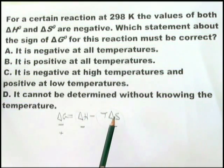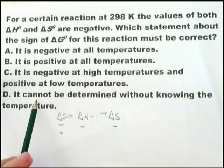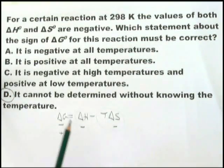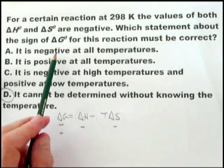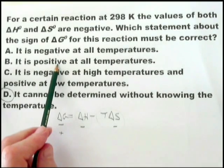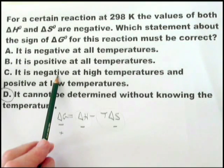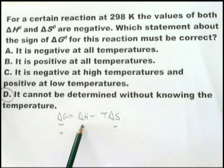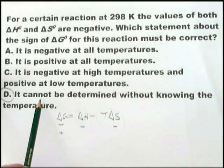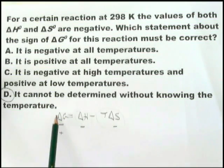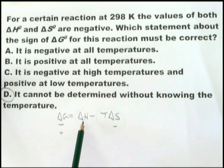It's the kind of thing where you have to practice changing the signs of delta H and delta S without being given numbers until you feel comfortable. Looking at the answer choices: option A says it is negative at all temperatures — no, we know it's not negative at all temperatures. Option B says positive at all temperatures — no. Option C says negative at high temperatures — no, we found it's actually negative at low temperatures. So D — it cannot be determined without knowing the temperature — is the only possibility.